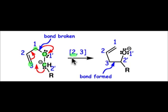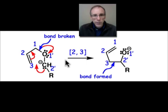We put the smaller number first, and so we have the [2,3]-sigmatropic rearrangement. In the next webcast, we'll examine the [1,5]-sigmatropic rearrangement, doing a frontier molecular orbital analysis on that reaction.